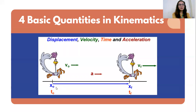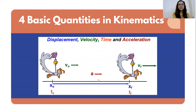When we talk about displacement, that is represented by the blue line. We have x-naught as your initial position and x as your final position. Your time — t-naught at your starting position and t-f at your final position. We also have initial velocity and final velocity, and then acceleration. I will further discuss more about velocity, time, and acceleration in our next videos.